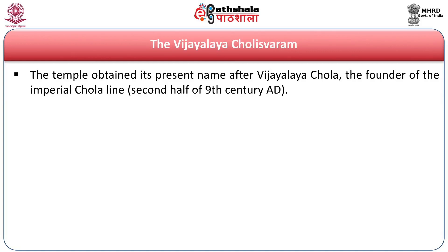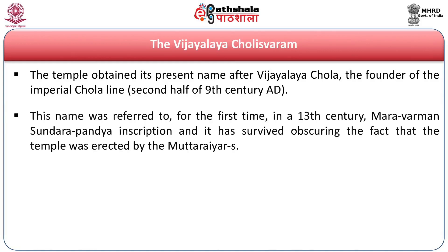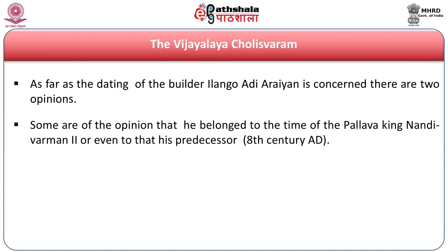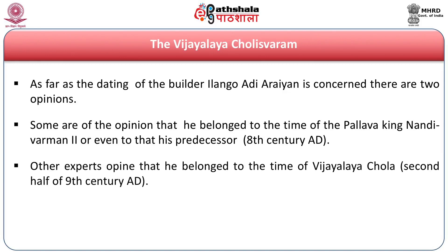The inscription says the temple was originally built by one Shambuti, also called Ilangu Adhi Arayan, and that it suffered damage by heavy rains and was repaired by one Mullen Viduman, also called Tamil Adhi Arayan. The temple obtained its present name Vijayalaya Cholishvaram after the founder of the Imperial Chola dynasty, around the second half of the 9th century AD. This name was referred to for the first time in a 13th century Maravarman Sundara Pandya inscription. As for the dating of the builder Ilangu Adhi Arayan, there are two opinions — some say he belonged to the time of Pallava king Nandivarman II, while others say he was a contemporary of Chola king Vijayalaya I.